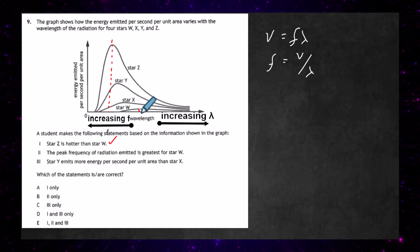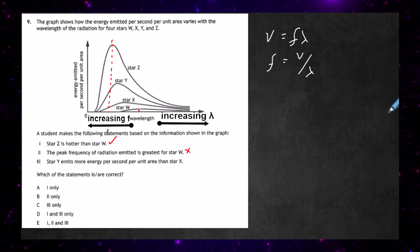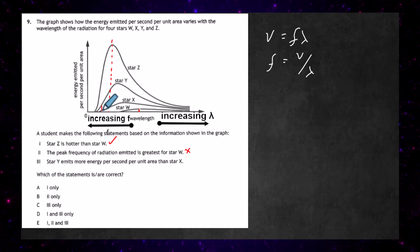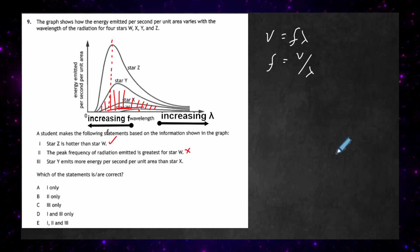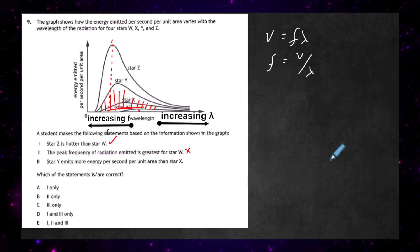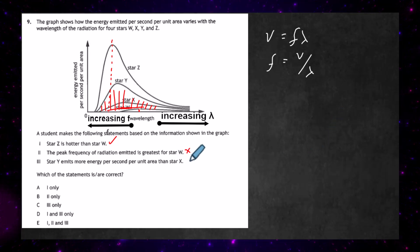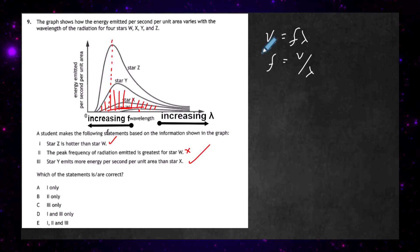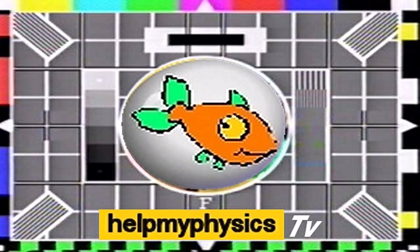Since star W's peak is at the low end of the frequency scale, it can't have the greatest peak frequency, so statement two is false. Statement three: star Y emits more energy per second per unit area than star X. That's true — you can see that the area under star Y's curve is a lot more than the area under star X's curve. Star Y has a bigger area, so it does emit more energy per second per unit area. Statements one and three are true, and the answer is D.